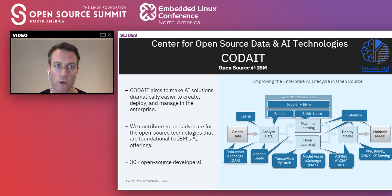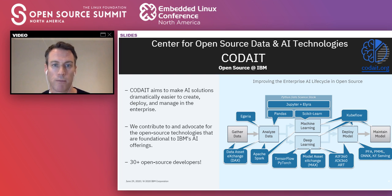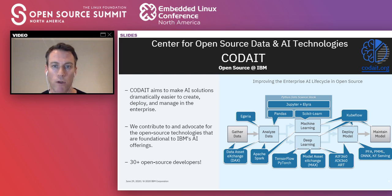A little bit about CODAT, the Center for Open Source Data and AI Technologies. We're a team of over 30 open source developers within IBM working on the enterprise AI lifecycle in open source. We advocate for and contribute to projects critical to IBM's data and AI offerings, including the Python data science stack, open exchanges for data and deep learning models, deep learning and machine learning frameworks, Apache Spark, AI ethics libraries, and model deployment standards.